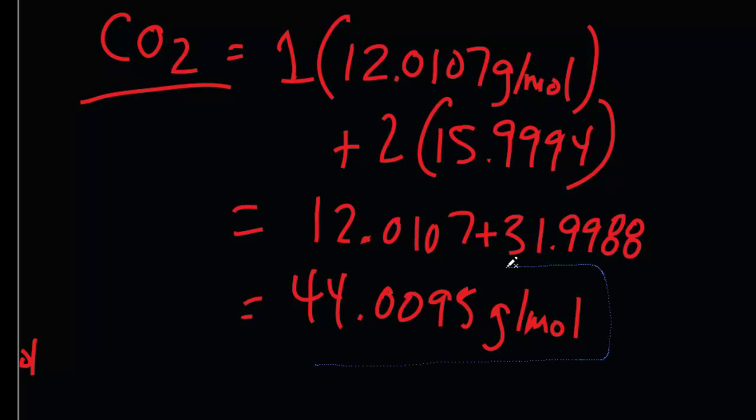In other words, one mole of carbon dioxide, or 6.022 times 10 to the 23rd molecules of carbon dioxide, are going to equal 44.0095 grams.